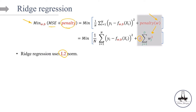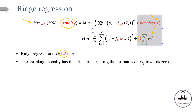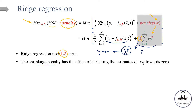Our lambda is our shrinkage parameter. The shrinkage parameter has the effect of shrinking the estimates of W towards zero — it doesn't make them exactly zero, it forces them towards zero. If lambda increases, the penalty term increases, and the algorithm will reduce the weights of features that are less contributing to the model fit. As you increase lambda, the algorithm forces those Wjs towards zero. We'll discuss later why ridge regression cannot make the weights exactly equal to zero.